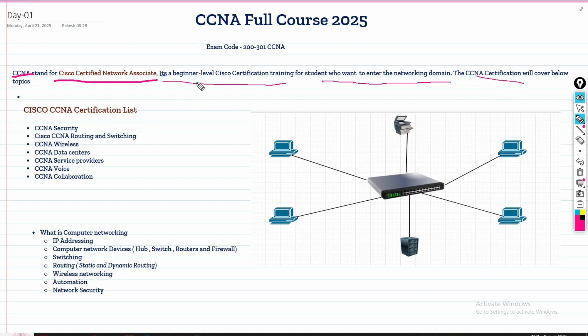The exam code is 200-301 CCNA. The CCNA certification list includes CCNA Security, CCNA Routing and Switching, CCNA Wireless, CCNA Data Center, CCNA Service Provider, CCNA Voice, and CCNA Collaboration. These are certifications at the CCNA associate level. After this certification, the advanced certifications will be CCNP, then CCIE.